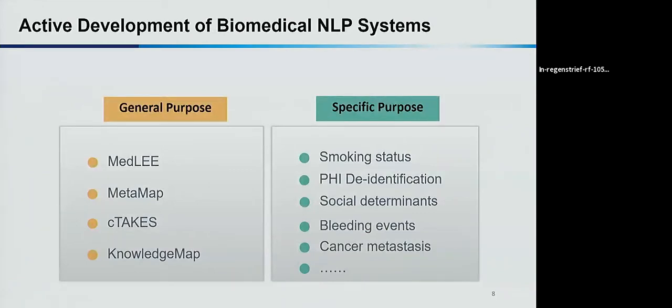I classify those systems to two types. One is general purpose NLP systems, which extract all types of clinical concepts - disease, drug, lab tests, their modifiers. It takes a lot of time to develop, requires a lot of resources. There's really just a handful like MedLEE, MetaMap, cTAKES, KnowledgeMap. Then there's a lot of specific purpose systems - you need to extract these five elements for a research project. You build a specific pipeline. There must be hundreds or even over a thousand different NLP pipelines built for specific purposes.